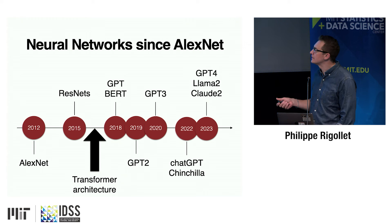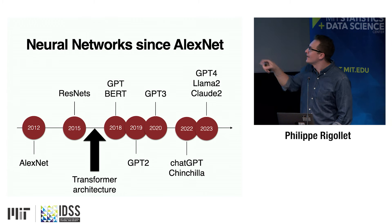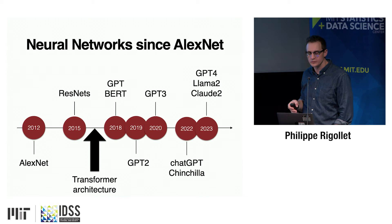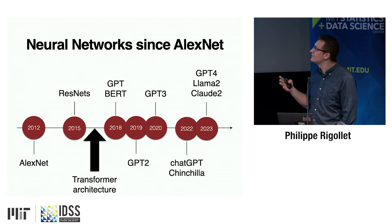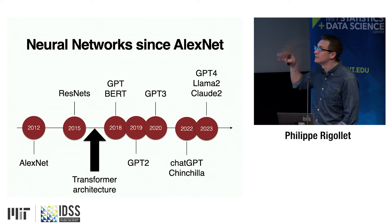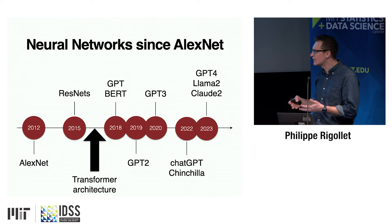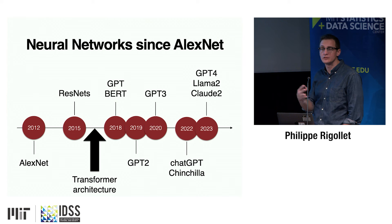Over the years, neural networks have been completely taking over machine learning. One architecture important for me is ResNets — residual networks — introduced by our new colleague Kai Ming-He. In 2017, the transformer architecture was introduced, and starting from there, new acronyms showed up: ChatGPT, GPT-4, Claude. One of the big shifts is that we moved from vision applications like image classification to natural language processing, which made it very pervasive in all our lives.